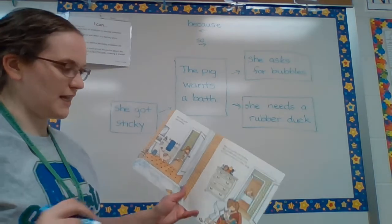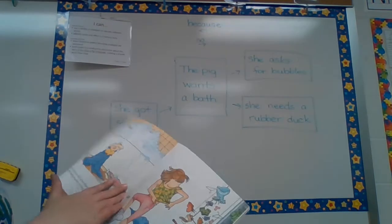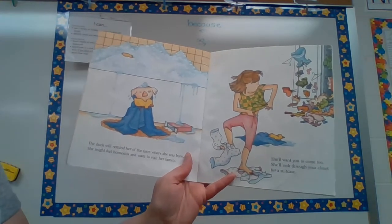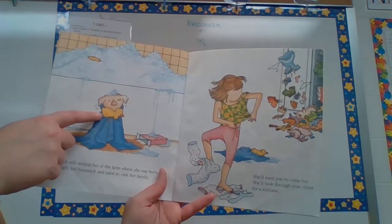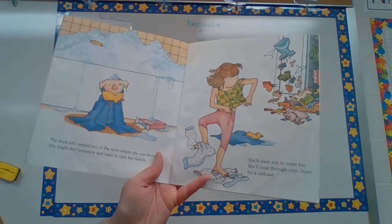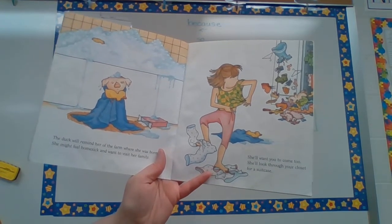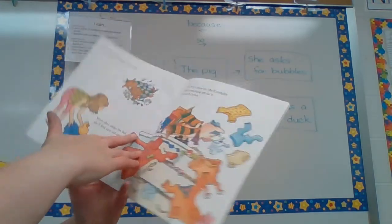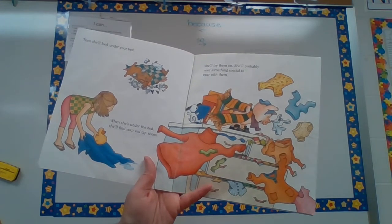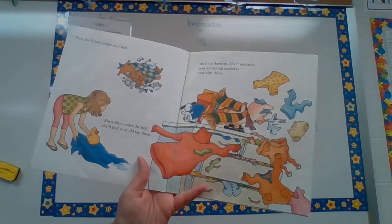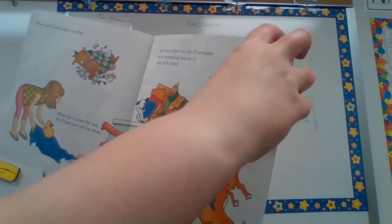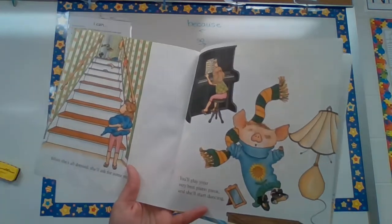She doesn't want to do it without those things. The duck will remind her of the farm where she was born. She might feel homesick and want to visit her family. Seeing that rubber duck caused her to remember her home on the farm and feel a little bit sad. She'll want you to come too. She'll look through your closet for a suitcase, then she'll look under your bed. When she's under the bed, she'll find her old tap shoes. She'll try them on and she'll probably need something to wear with them. Everything she does is causing something else to happen — causing her to think of something else or want something else.